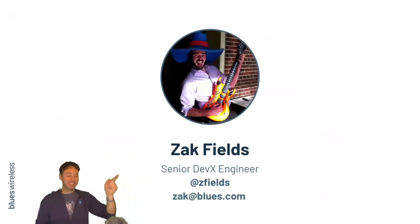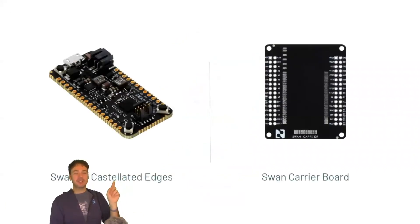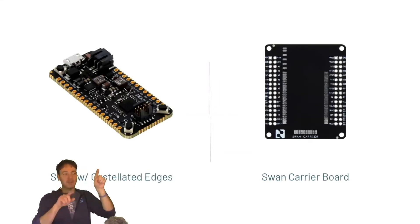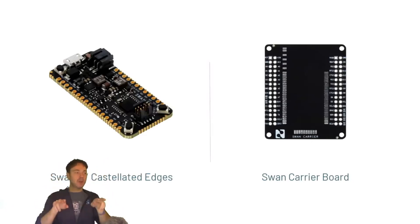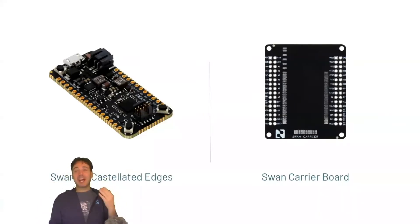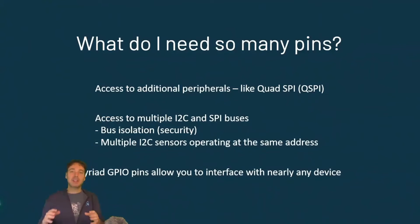Hello once again, thank you Brandon. What does it mean to take the SWAN beyond the feather? It means taking advantage of those castellated edges. We've provided a SWAN carrier board — you can see the two lines of solder pads close together — that lets you solder the SWAN down and get access to the 64 pins on the two rails running up and down the sides. Some peripherals are only available with those additional pins, notably QSPI — quad SPI — which operates significantly faster than standard SPI.